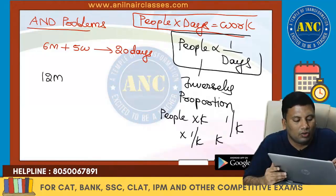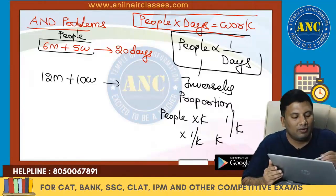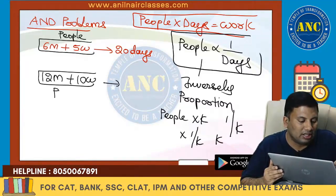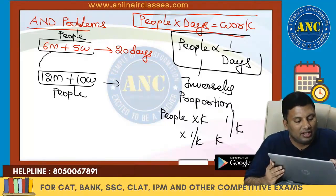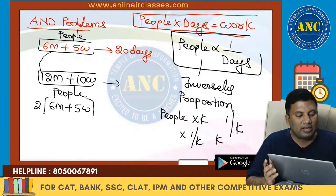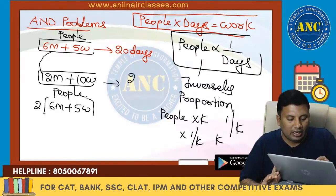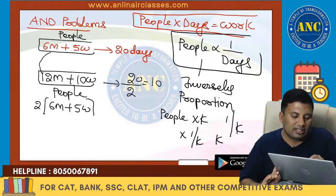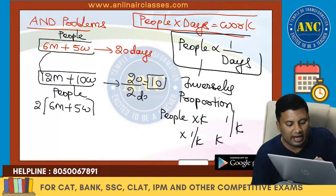Suppose we have 12 men plus 10 women. These are nothing but 2 × (6m + 5w). People became double, so days become half: 20 ÷ 2 = 10 days. The answer is 10 days.